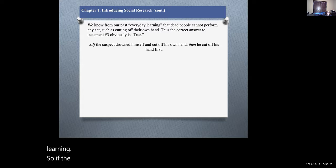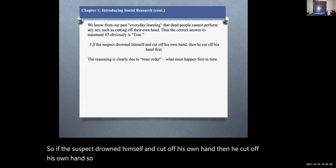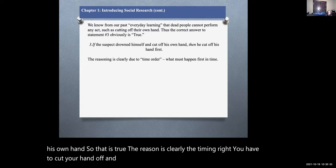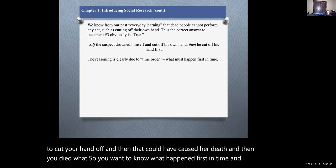If the suspect drowned himself and cut off his own hand, then he cut off his own hand first. So that is true. The reason is clearly the timing, right? You had to cut your hand off and that could have caused your death.